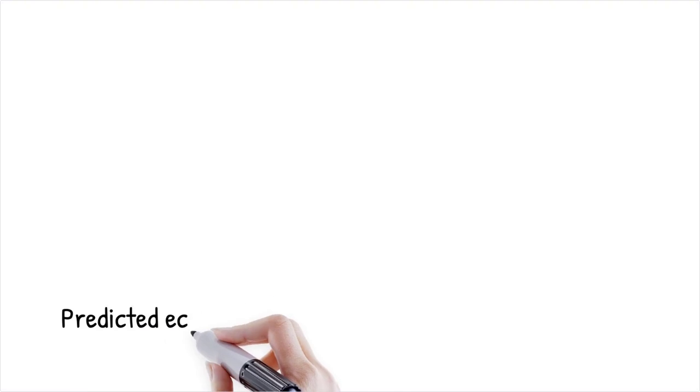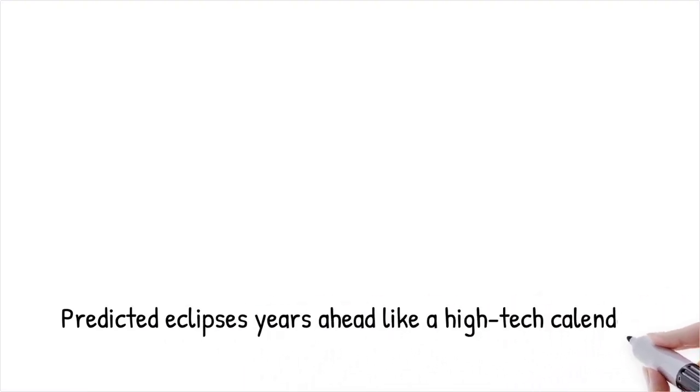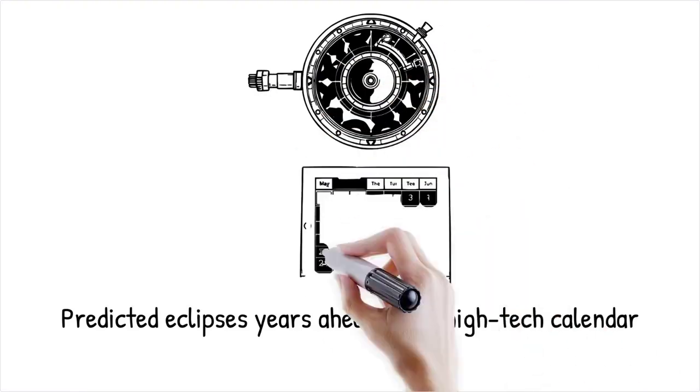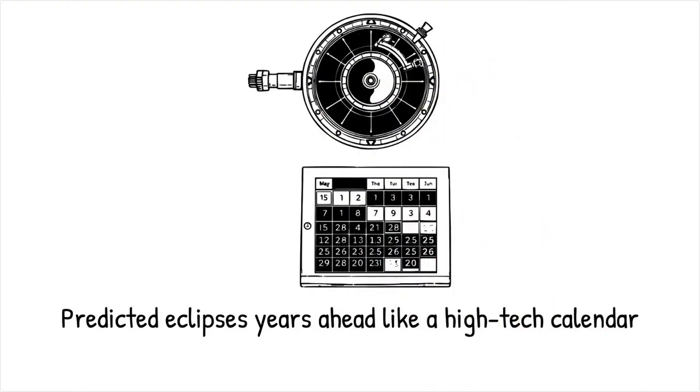Studies have shown that the mechanism could predict solar and lunar eclipses years in advance, much like a modern digital calendar displays upcoming events. It's like having a high-tech calendar that not only reminds you of birthdays, but also forecasts weather patterns far into the future. Only this ancient version predicted the cycles of the sky.